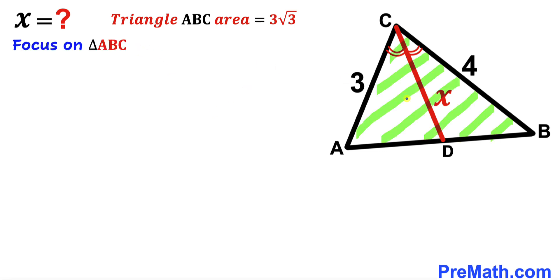Let's focus on the big triangle ABC. Let's assume that this whole angle ACB is theta and now let's make an observation.